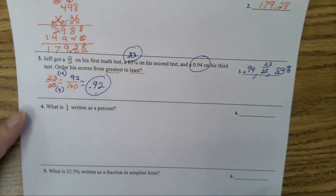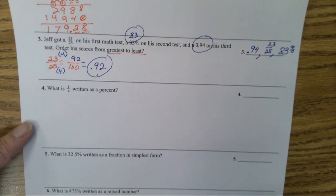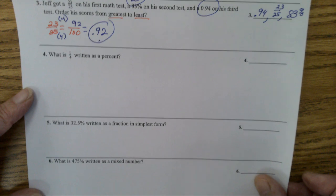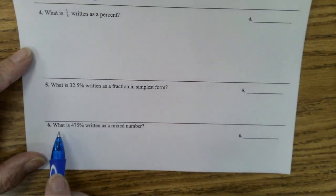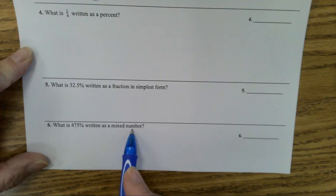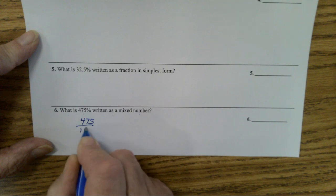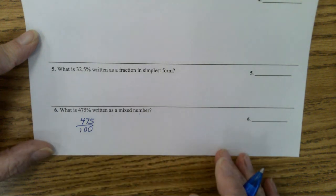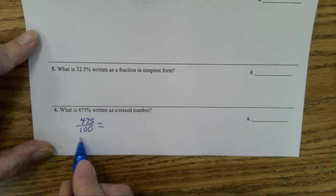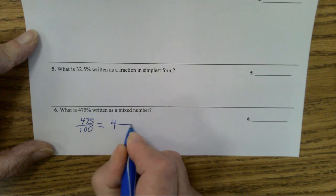We're almost done with this. Any other problem that you would like me to do that was a little more challenging? Number six: What is 475% written as a mixed number? You put 475 over 100. Percent means per 100. Now we change it to a mixed number. How many hundreds are in 475? Four. How many left over? 75.